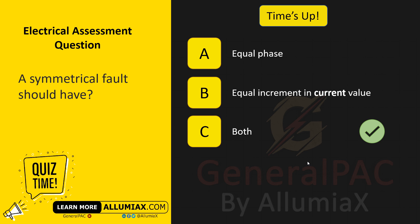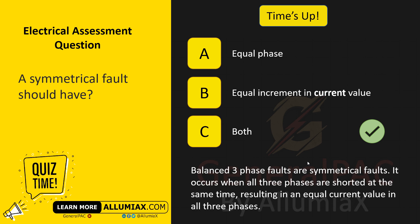The answer is C — both. Balanced three-phase faults are symmetrical faults. They occur when all three phases are shorted at the same time, resulting in an equal current value in all three phases.